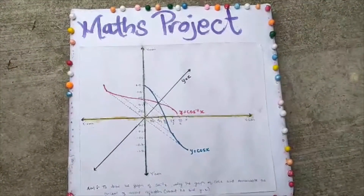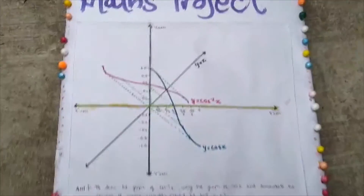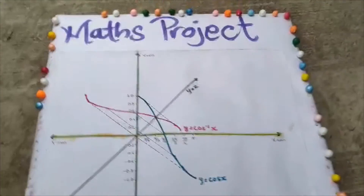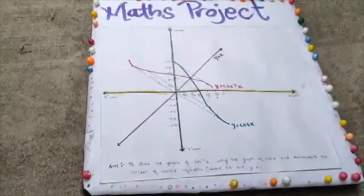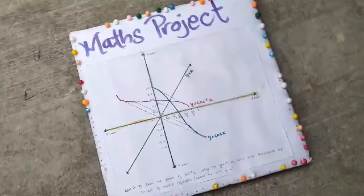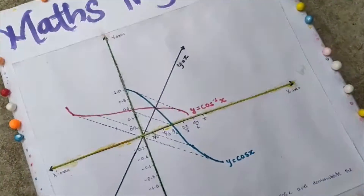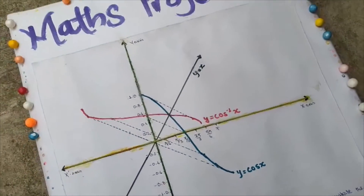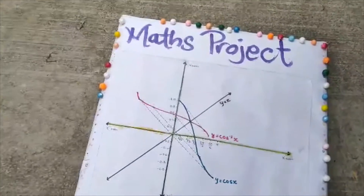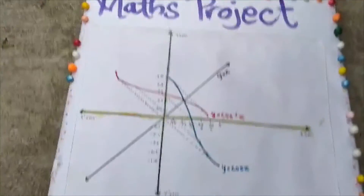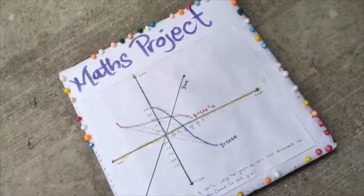Here, I have taken different values of cos function for different angle values and the curve of cos x is represented here by blue line as you can see. Then I have made a line y equals to x and draw perpendicular to y equals to x from each point of cos curve. Then extended the perpendicular line to the same distance that is from cos curve. Then, by joining all these points with each other, we got the tracing of cos inverse x.